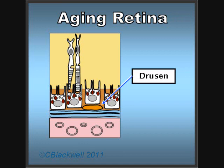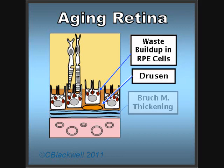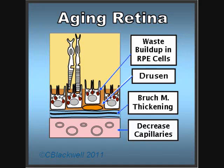There are other things happening that you cannot see. The RPE cells, after a lifetime of digesting the end segments of the rods and cones, eventually become glutted with debris, lose function, and begin to die off. Bruch's membrane becomes thicker, meaning less oxygen and nutrients are able to pass through to reach the retinal cells. And over time, the number of capillaries supplying the retina decreases, also meaning less blood supply is available.